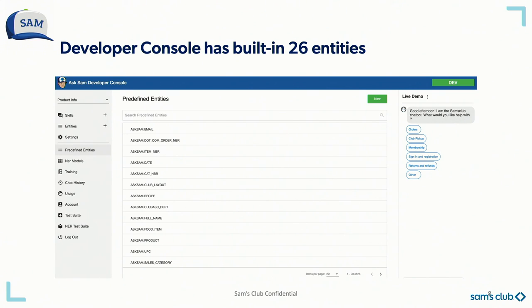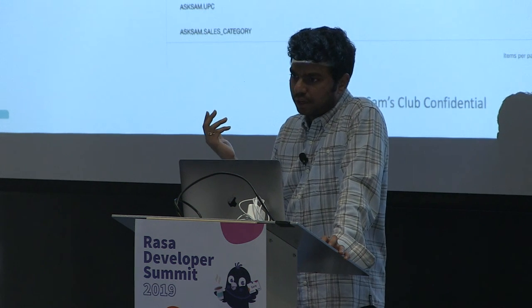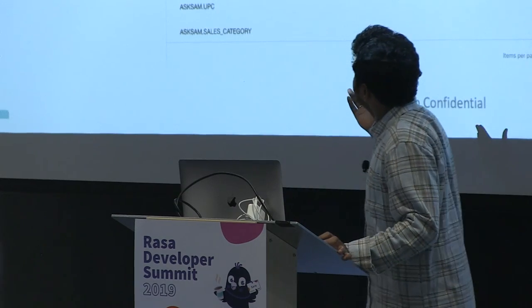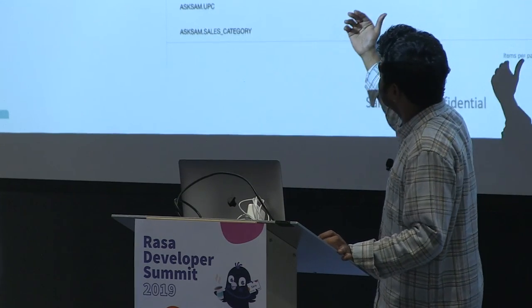The entities we have include product name, email, date, recipe, department name, and others that are very custom to the Sam's Club business. Whoever wants to create a virtual assistant or chatbot can leverage these entities and train the intent models, which saves time because these entities are trained on a very large dataset with proper data augmentation and fine-tuned with good test sets.